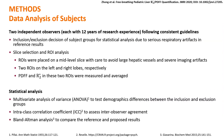Two independent observers, each with 12 years of research experience, performed the data analysis following consistent guidelines. They first independently made an inclusion-exclusion decision for subject groups due to serious respiratory motion artifacts in reference results. They then placed ROIs carefully on the left and right lobes of one mid-level liver slice to avoid vessels and serious artifacts. PDFF and R2-star values in these ROIs were measured and averaged. For statistical analysis, ANOVA tested demographics differences between groups, ICC assessed inter-observer agreement, and Bland-Altman analysis compared reference and proposed results.